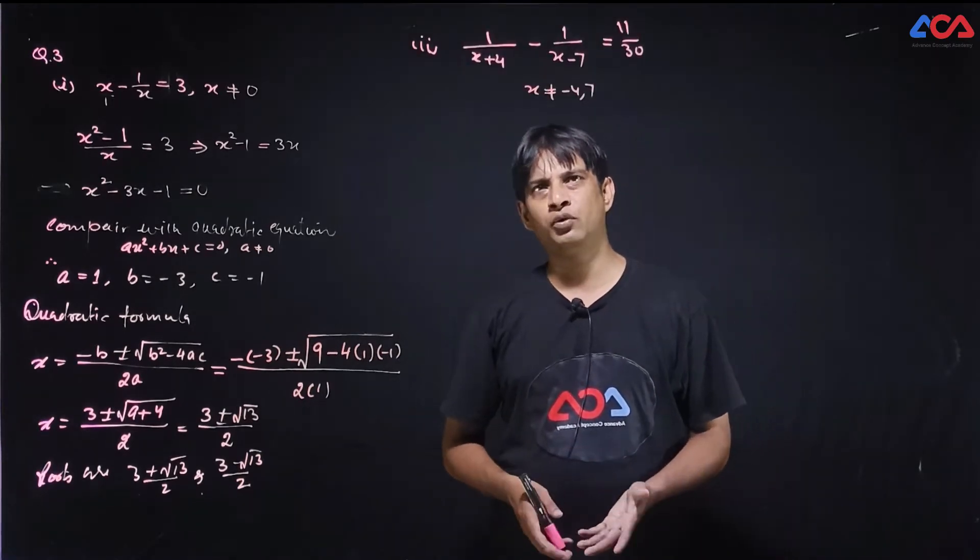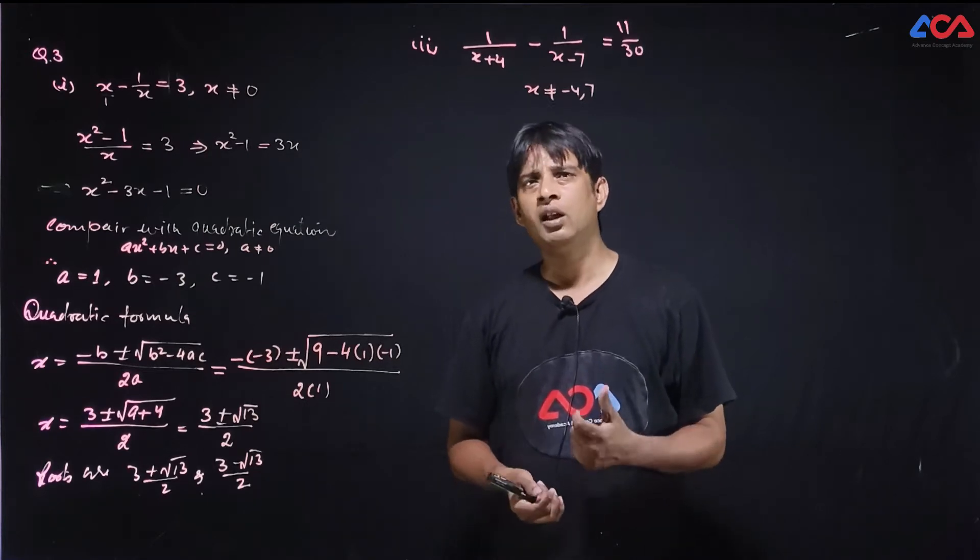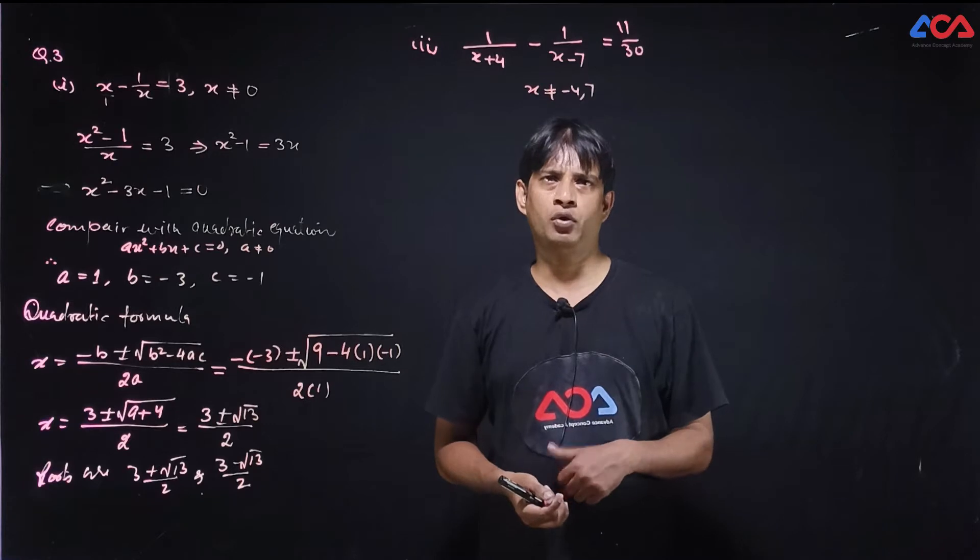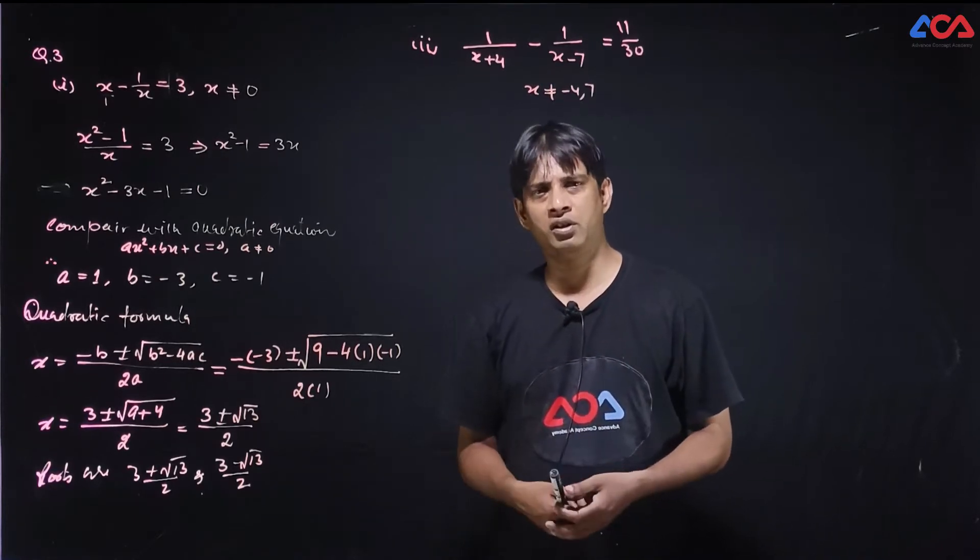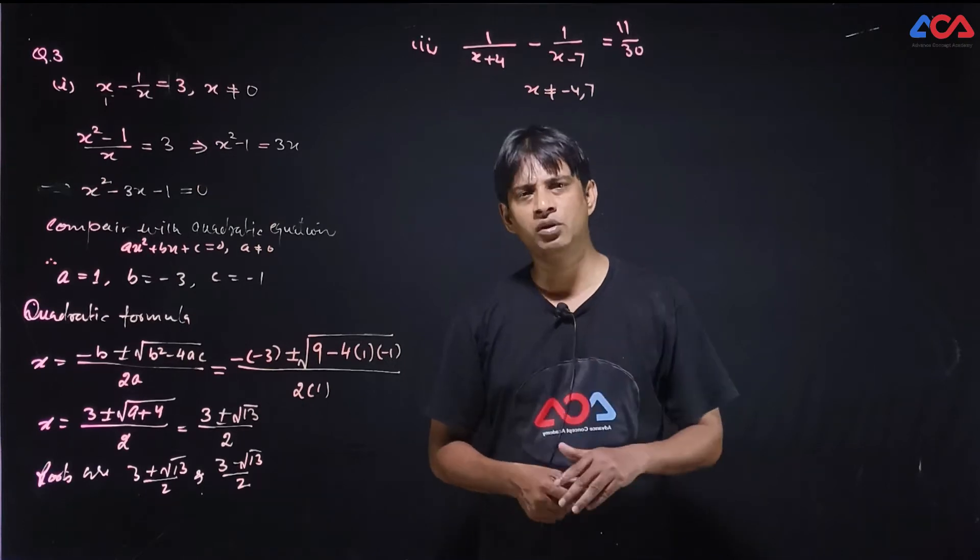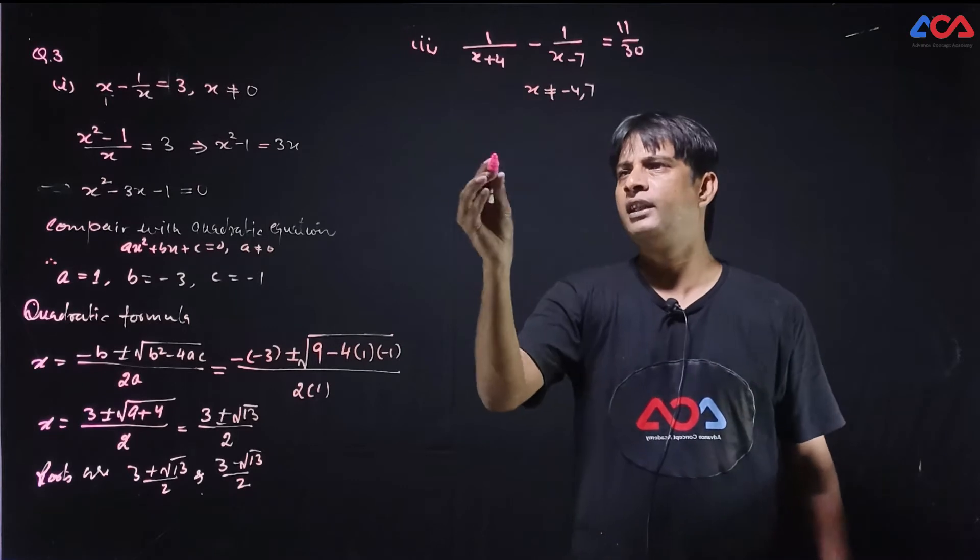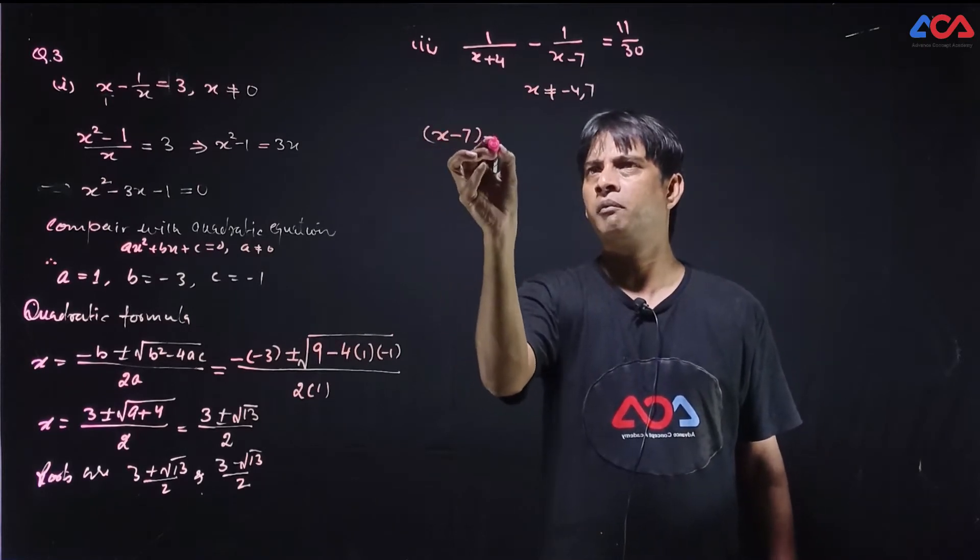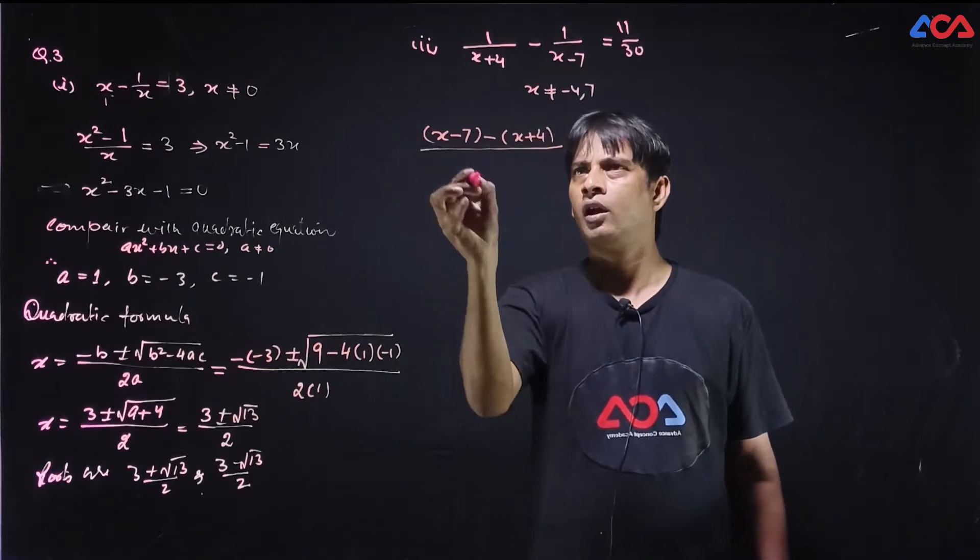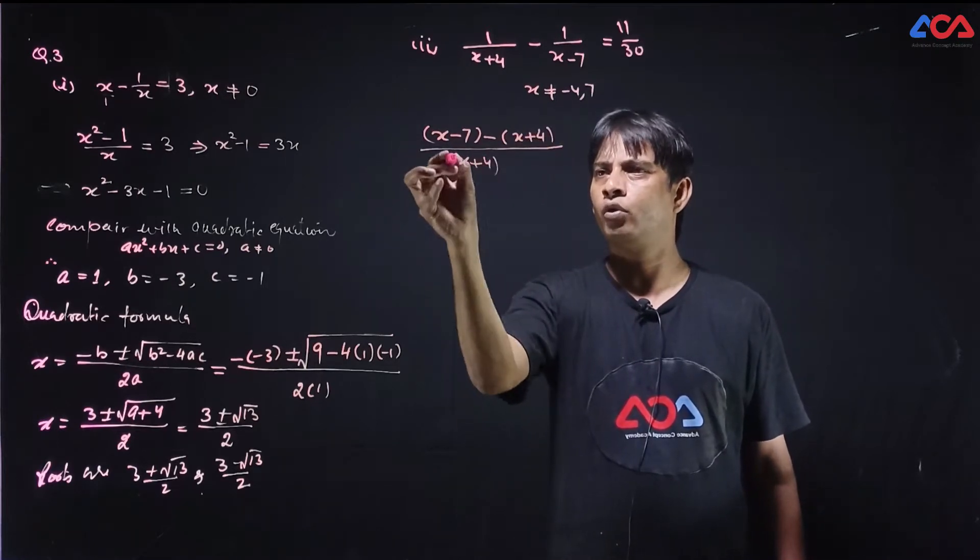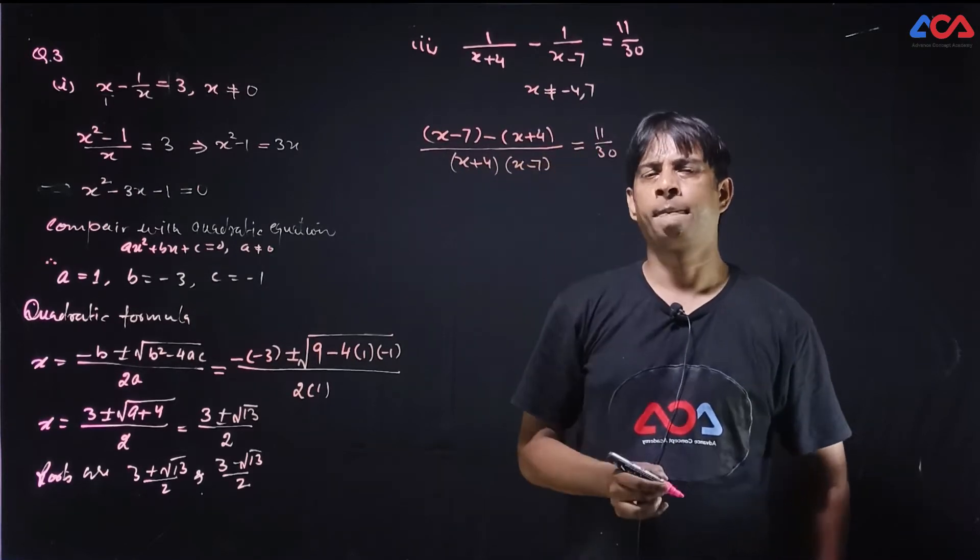1 upon x plus 4 minus 1 upon x minus 7 is equal to 11 upon 30. Where x is not equal to minus 4 and 7. If it happens, the condition is not defined. Let's solve this. x minus 7 minus x plus 4, x plus 4, x minus 7 which is equal to 11 upon 30.